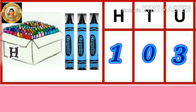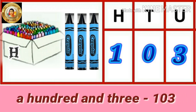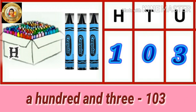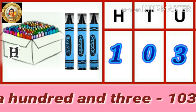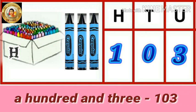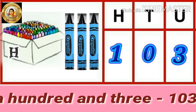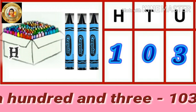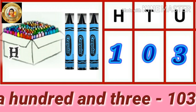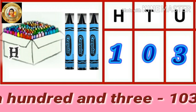Next, how many single crayons are there in the picture? Yes, three single crayons. So three in the unit place. There are no tens, so zero in the tens place. And a box of hundred crayons, so one in the hundred place. It makes the number a hundred and three.